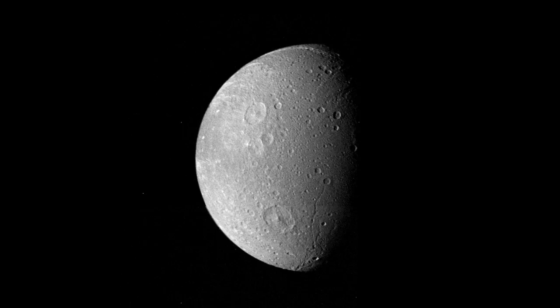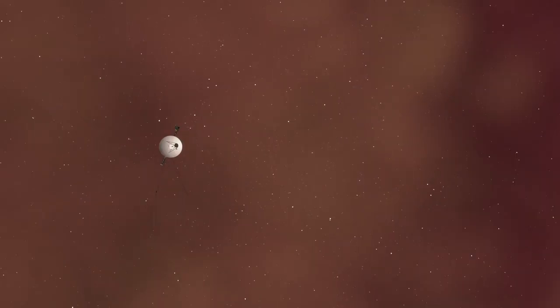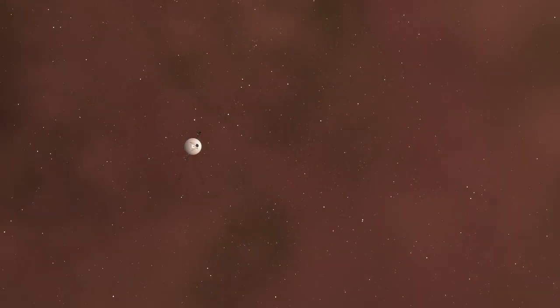After its central mission was complete, Voyager 1 was sent out of the solar system as a secondary mission. Now it will hurtle through space for what is, essentially, forever.